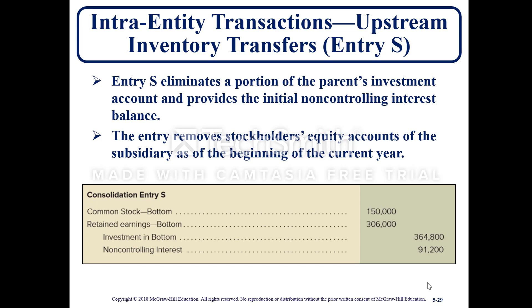For upstream inventory transfers, entry S eliminates a portion of the parent's investment account and provides the initial non-controlling interest balance. The entry removes stockholders' equity accounts of the subsidiary at the beginning of the current year, with a debit to common stock for $150,000 and a debit to retained earnings for $306,000, a credit to investment in Bottom for $364,000, and a credit to non-controlling interest of 20% for $91,200.